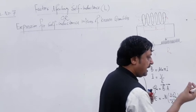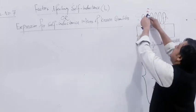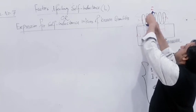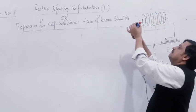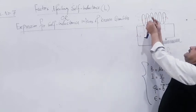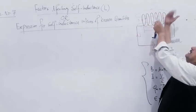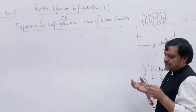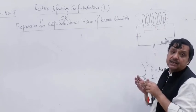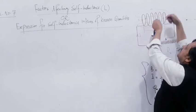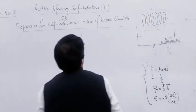We are going to derive an equation for self-inductance in terms of known quantities. If you apply the right-hand rule, the current flows in this direction. The current is passing like this through the solenoid. What is basically a coil or solenoid? It is a combination of loops, a combination of turns — one turn, another, another, another, like this. It is a combination of loops, a combination of turns, which is a type of solenoid.